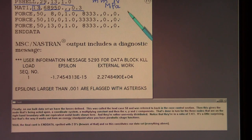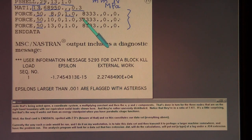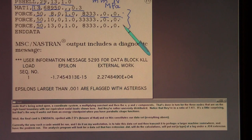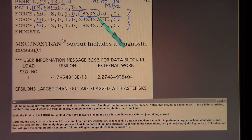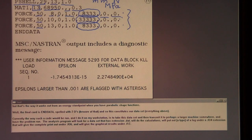Finally, on our bulk data set, we have the forces defined. This was called the load case 50 and was referred to back in the case control section. Then this gives the node that's being acted upon, a coordinate system, a multiplying constant, and then the X, Y, and Z components. That's done in turn for the three nodes that are on the right-hand boundary with our equivalent nodal loads shown here. And they're rather unevenly distributed. Notice that they're in the ratio of 1 to 4 to 1. It's a little surprising, but that's the way it works out from an energy standpoint when you have parabolic shape functions.